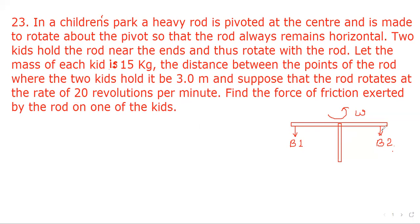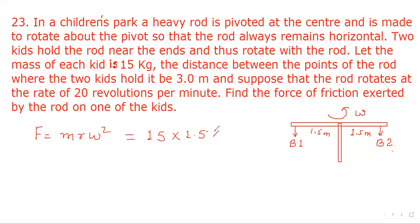The total distance is 3 meters, so we can take each side as 1.5 meters radius. The centripetal force is F = mRω². Mass of each kid is 15 kg, radius is 1.5 meters, and ω = 2π × (20/60), which gives 1/3 revolutions per second.